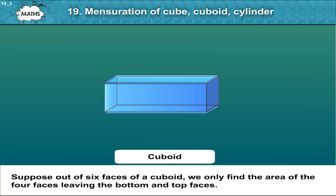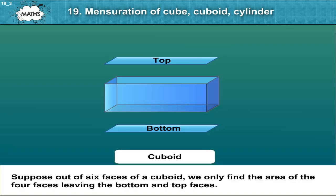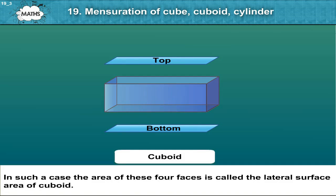Suppose out of six faces of a cuboid, we only find the area of the four faces, leaving the bottom and top faces. In such a case, the area of these four faces is called the lateral surface area of cuboid.